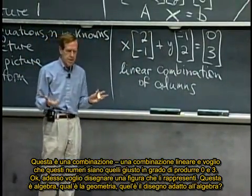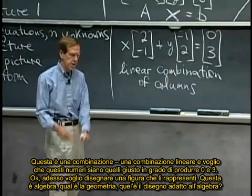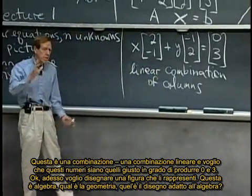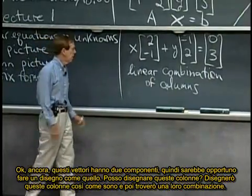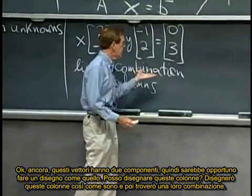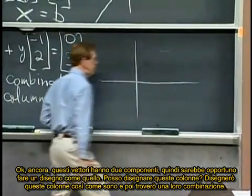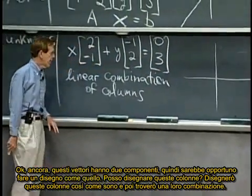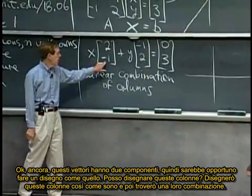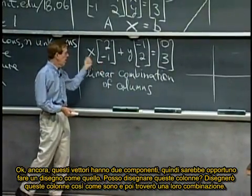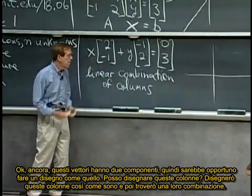Now I want to draw a picture that represents what this is. This is algebra. What's the geometry? What's the picture that goes with it? So again, these vectors have two components, so I better draw a picture like that. So can I put down these columns? I'll draw these columns as they are, and then I'll do a combination of them.